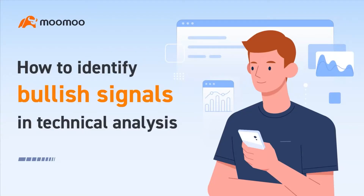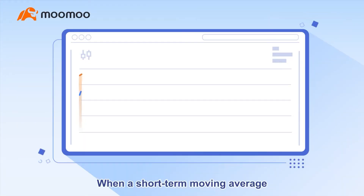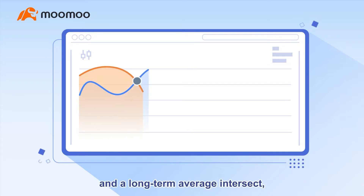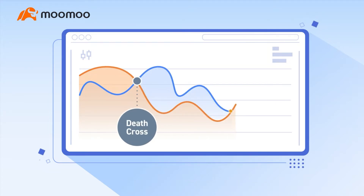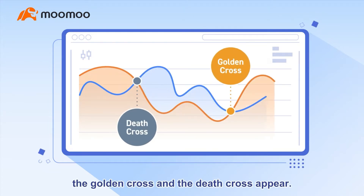How to identify bullish signals in technical analysis. When a short-term moving average and a long-term moving average intersect, the golden cross and the death cross appear.